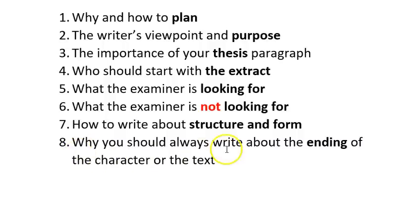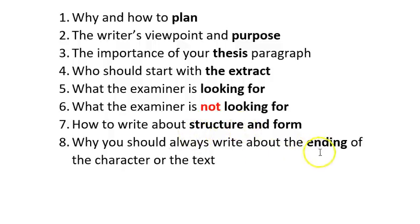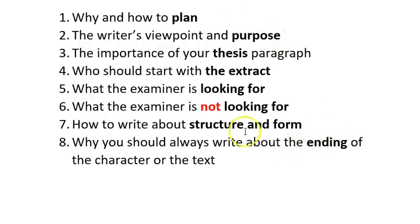When you start writing about why that extract appears at that particular point in the text, you're dealing with structure. The thing that will really round off your argument is writing about the end of either the character or the text — when you do that, you're again naturally writing about structure. Why has the author ended the text that way? But also, what new understanding of the author's purpose do we find from the ending? So I get a double benefit by writing about the ending: it helps me write about the author's purpose and about the structure of the text — both of which are going to get me the top grades.